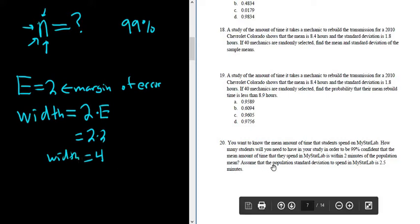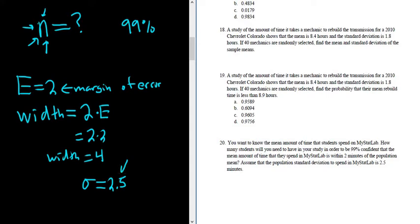Also, you'll notice it says, assume that the population standard deviation is 2.5. So they're giving us sigma. They're giving us the population standard deviation. So in this problem, we're going to use Z because they're giving us the population standard deviation.